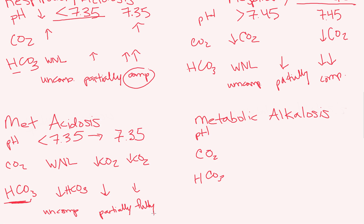Lastly, metabolic alkalosis means a high pH greater than 7.45 with a metabolic cause — bicarb is the cause. Bicarb is basic, so increasing our basic bicarb gives us a basic pH. We start out with normal CO2 because we haven't compensated — uncompensated. Your body gets tired of working with a basic pH and tells your lungs: what do I need to do with my acidic CO2 to help my basic pH? Well, increase the acid to even out the pH.